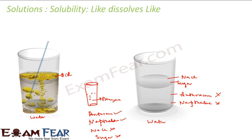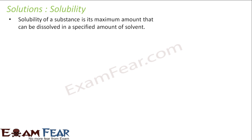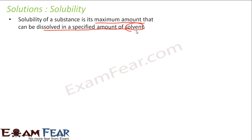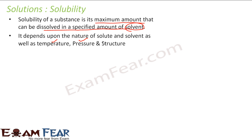The point I'm trying to convey is that not all solutes dissolve in all solvents — solubility is different. Some solutes dissolve easily; some dissolve by stirring or heating; some don't dissolve at all. So solubility is defined as the maximum amount of a substance that can be dissolved in a specified amount of solvent. This solubility depends on temperature, pressure, and structure, which we will see one by one.